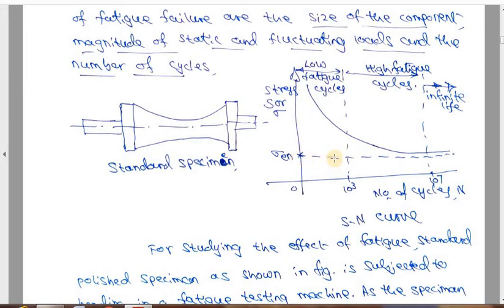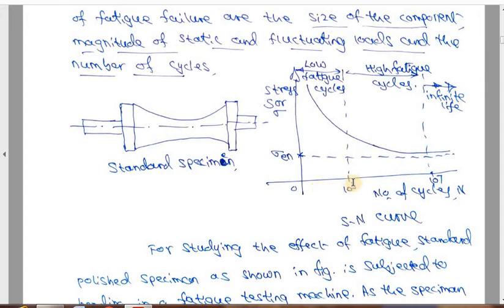This stress-N curve is famous for the fatigue type of loading. On the x-axis we can see 10^3 cycles and 10^7 cycles. Any member subjected to up to 10^3 cycles is in the low fatigue cycle range. Any member subjected to more than 10^3 up to 10^6 cycles is in the high fatigue cycle range. More than 10^7 cycles is called the infinite number of cycles range.